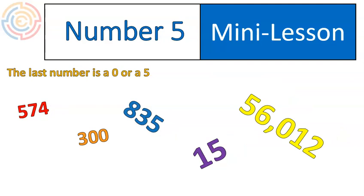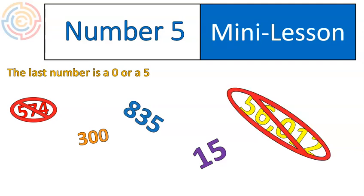Number 5. If the last digit is a 0 or a 5, then 5 is a factor of that number. Does 574 have a factor of 5? No, it does not. And 56,012 ends in a 2 — it does not end in a 0 or a 5 — therefore it will not divide evenly by 5, or in other words, it does not have a factor of 5.